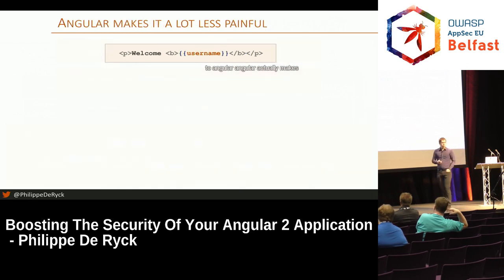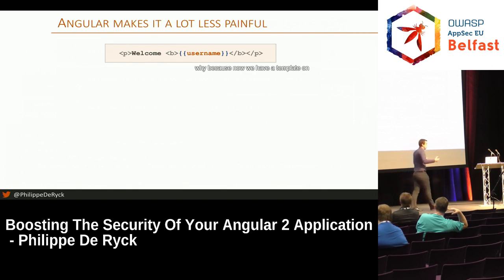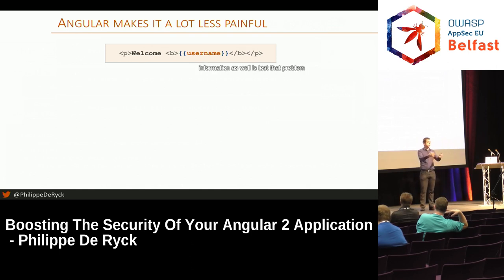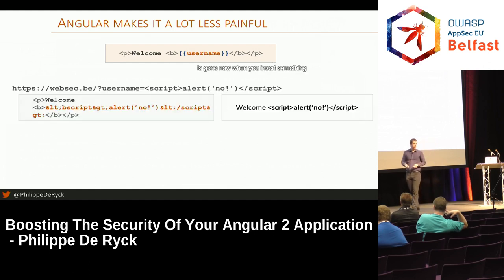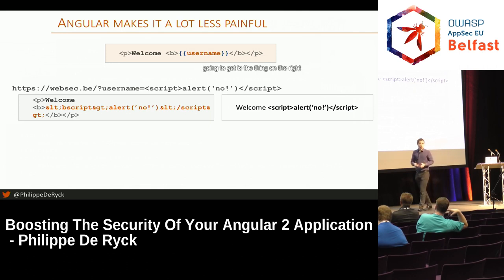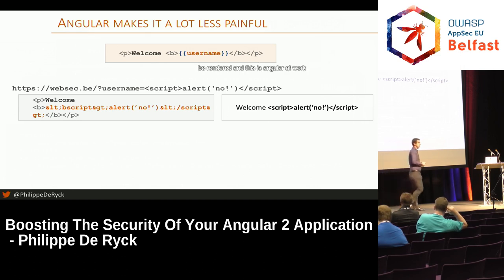Let's move to Angular. Angular actually makes cross-site scripting a lot less painful, because now we have a template on the client side and we fetch data from an API and insert it into the template. When you insert something like a script tag on the client side, Angular will put it into the template knowing it should be data, never code. So you'll see the script code rendered, not executed. This is Angular protecting you against cross-site scripting.